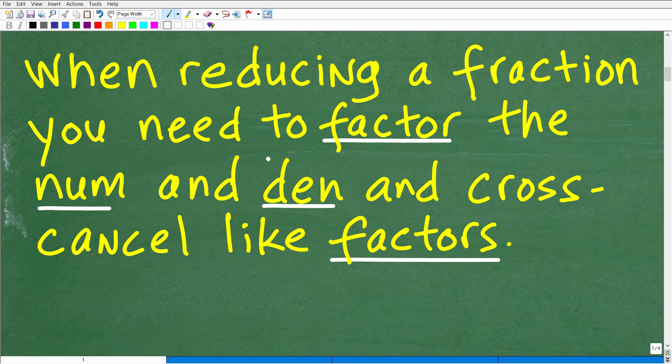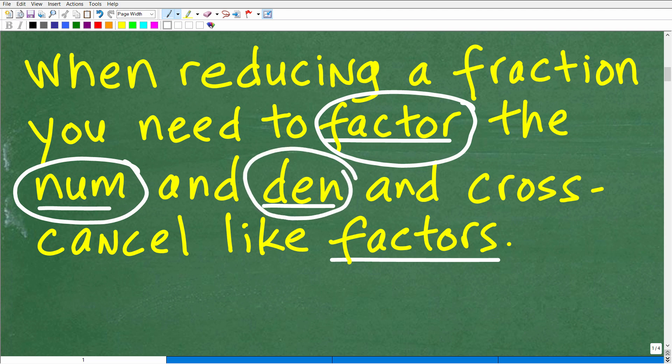It says when reducing a fraction, you need to factor. So that's the word I was looking for. You need to factor the numerator, and I just kind of abbreviated here, the numerator and denominator. And then we need to cross-cancel like factors. So this is the correct answer.